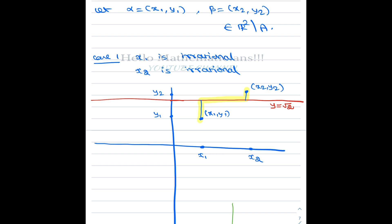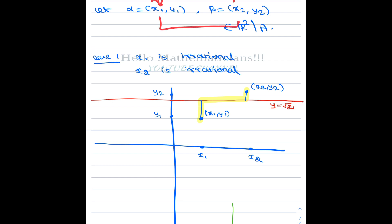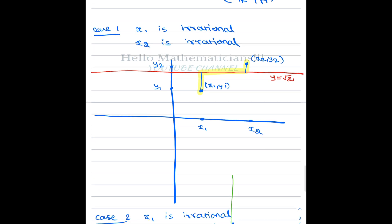The first case is when x1 is irrational and x2 is irrational. The second case is when x1 is irrational and x2 is rational (or vice versa). The remaining two cases reduce to the first two by swapping the roles of alpha and beta. So we only need to handle the first two cases explicitly.